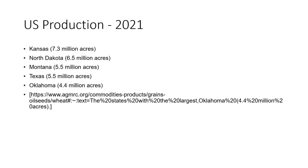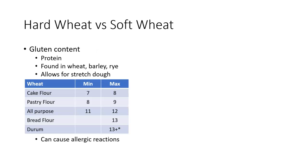The states with the largest planted area to wheat in 2021 were Kansas, North Dakota, Montana, Texas, and Oklahoma. Another classification is hard wheat versus soft wheat.